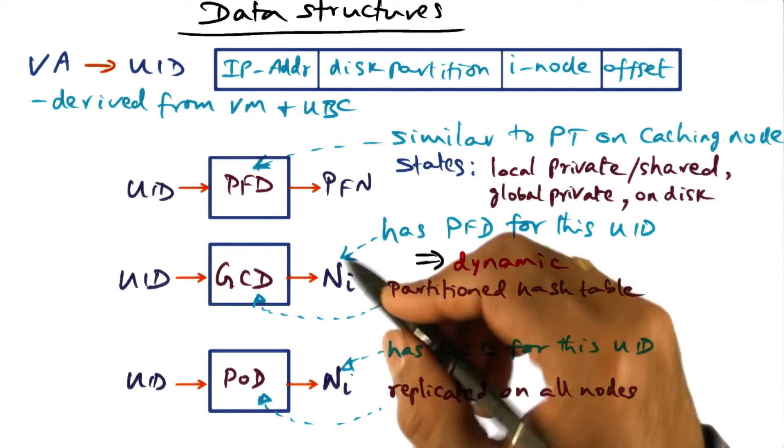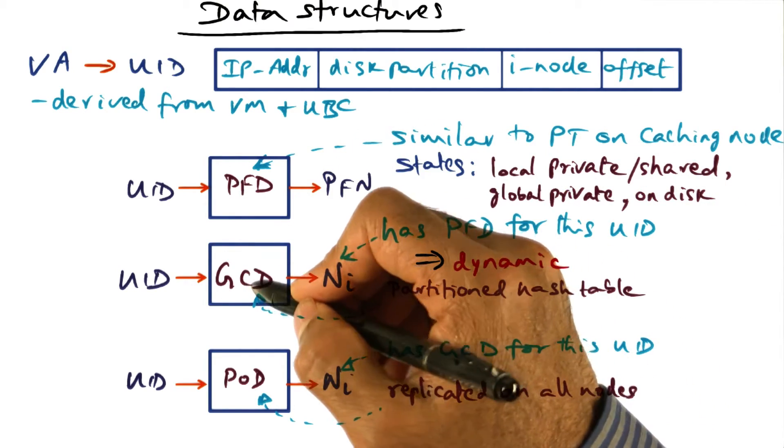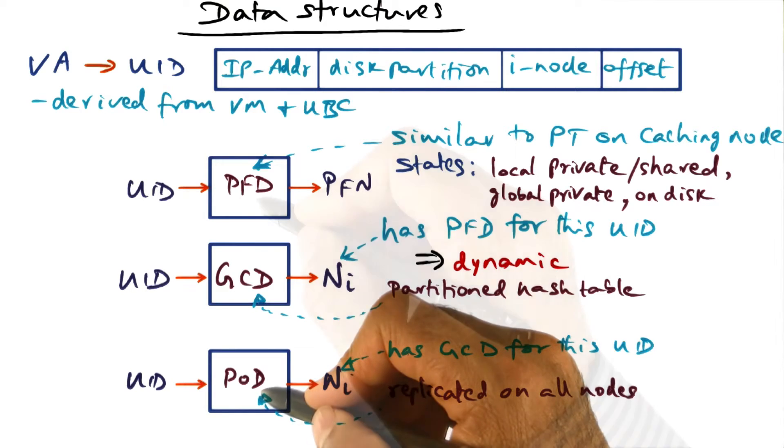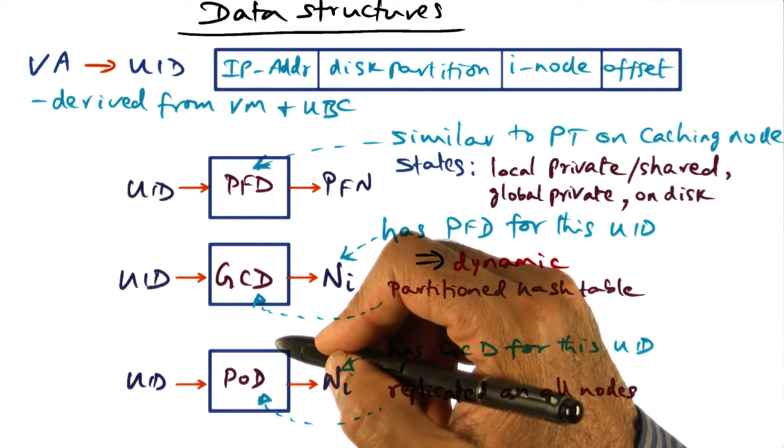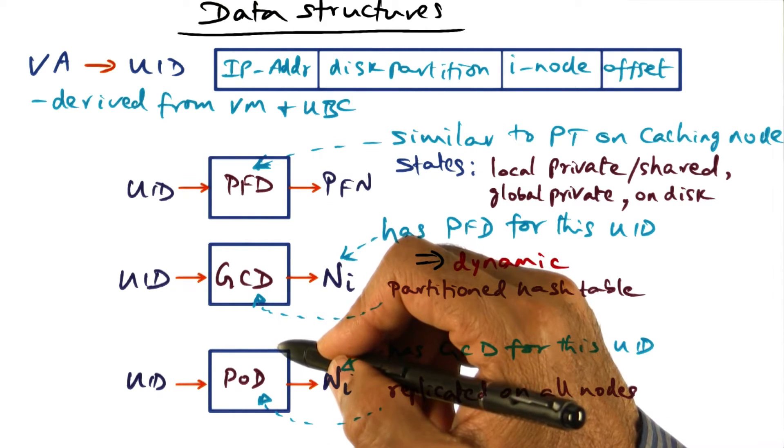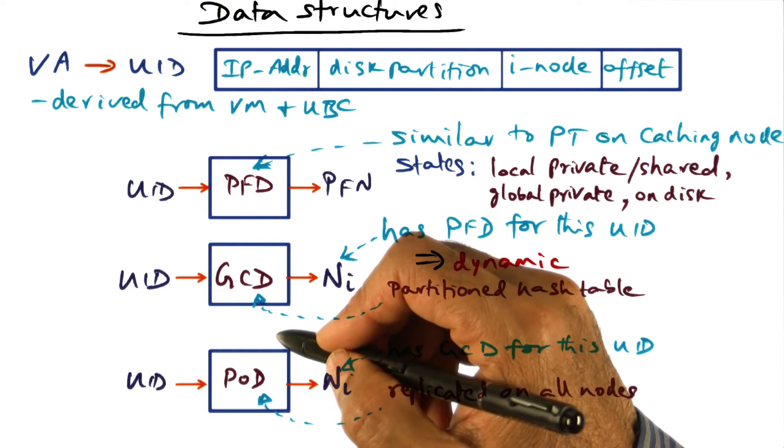There are three key data structures. PFD, GCD, and POD. These three data structures are the workhorses that make this cluster wide memory management possible.